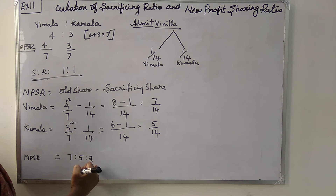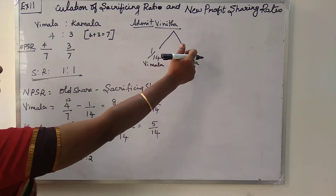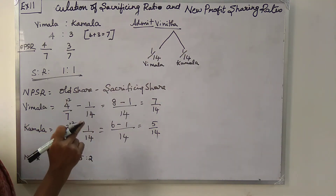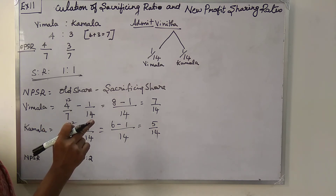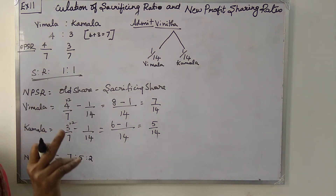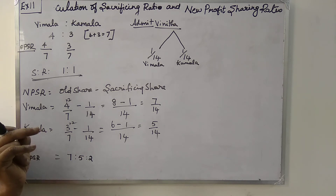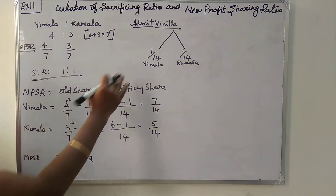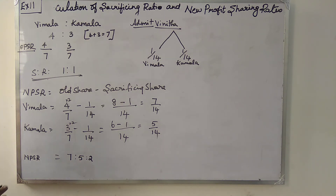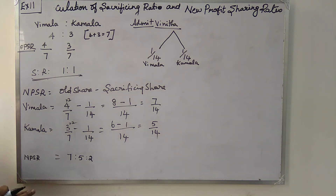So in this problem we have equal sacrifice. There are three types: equal sacrifice, unequal sacrifice, or sacrifice from entirely only one person. This is an equal sacrificing ratio. Sacrificing ratio is 1:1 and new profit sharing ratio is 7:5:2. Do exercise illustration 11 and this sum — it becomes easy for you. Thank you.